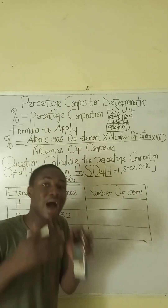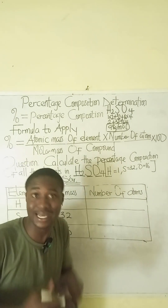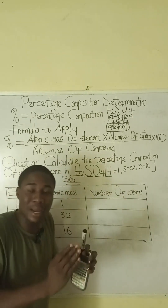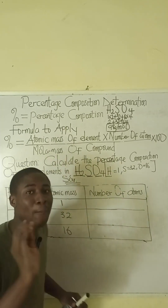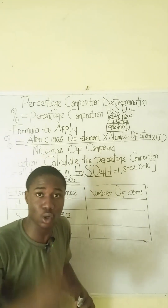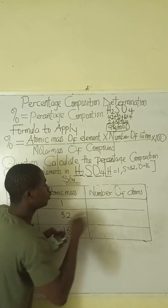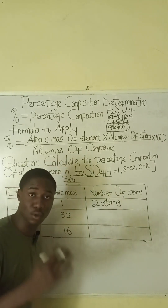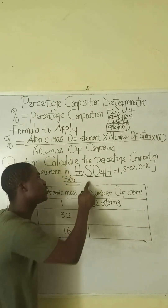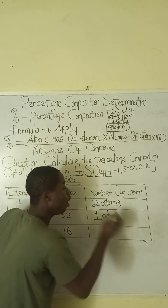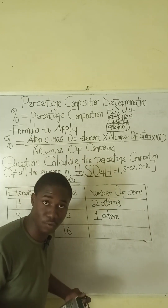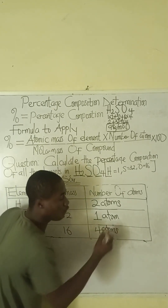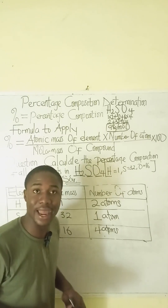Now for the number of atoms present in the compound: for hydrogen, we can see H₂, so there are 2 atoms of hydrogen. For sulfur, there is just 1 atom. For oxygen, we have O₄, so there are 4 atoms of oxygen.